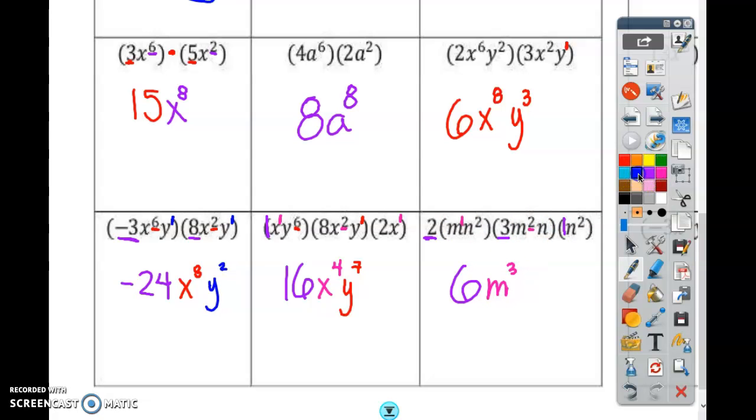And how many N's? 2 here, 1 here, 2 more here. 5. N to the 5th power.